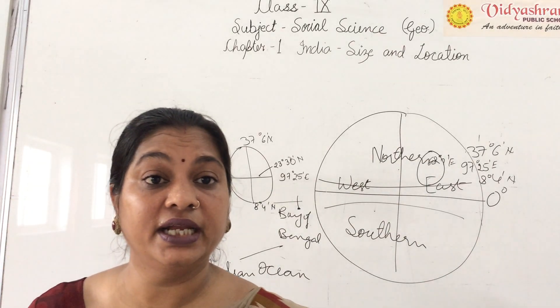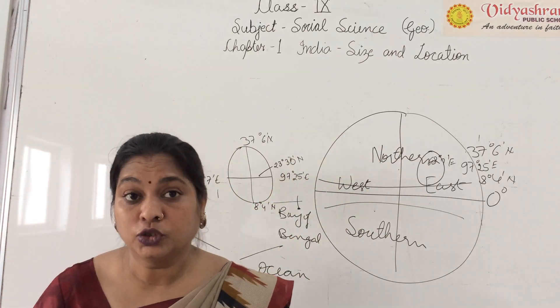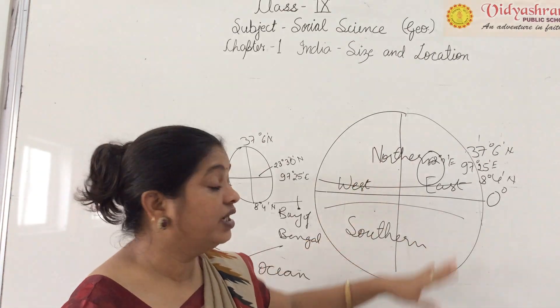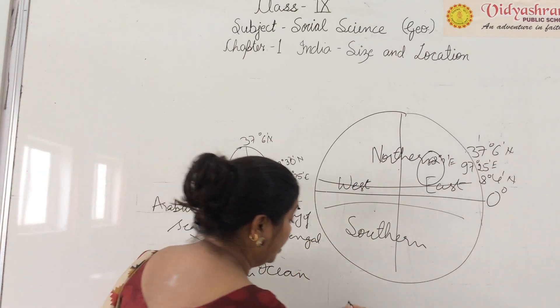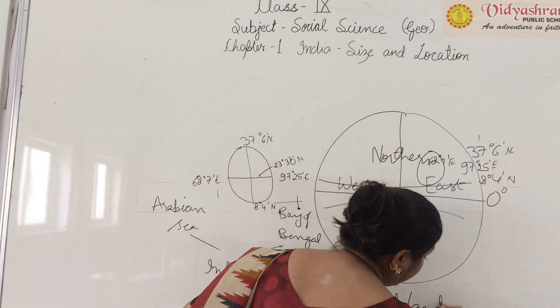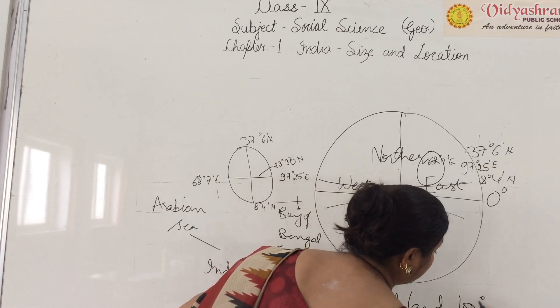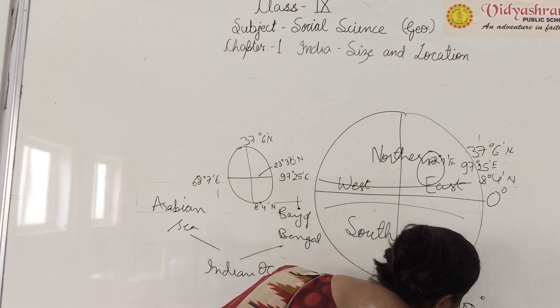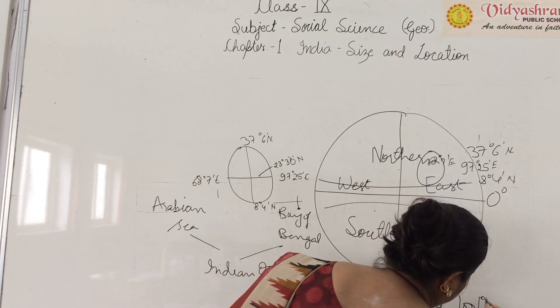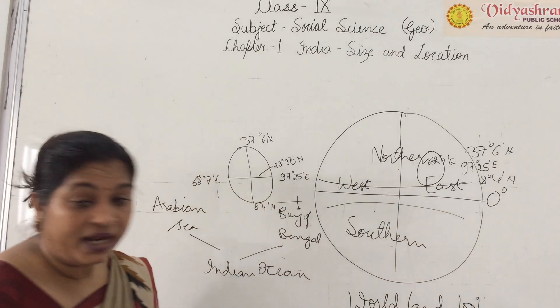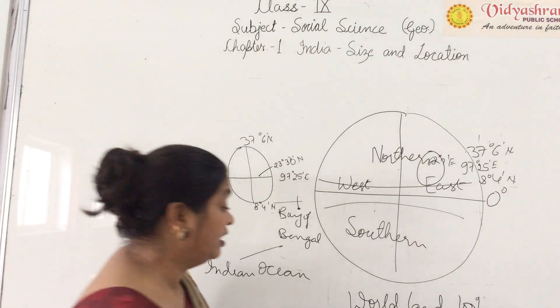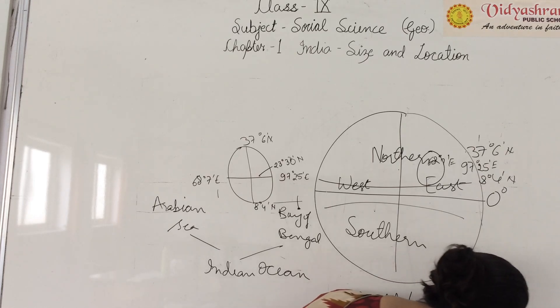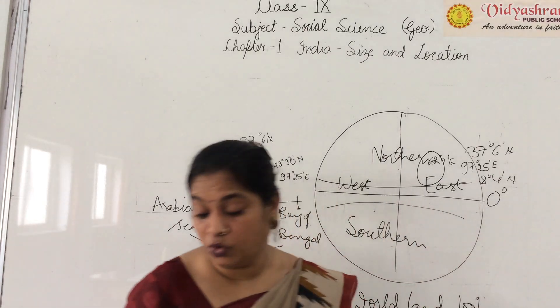Now let's move on to size. If we look at India in the whole world, we will look at the size of India. The land that India occupies is 3.28 million square kilometers. This is 2.4 percent of the world's total landmass.